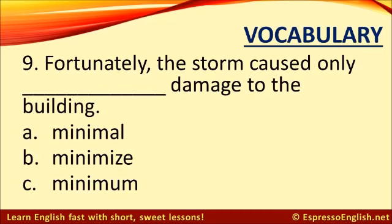Number nine. Fortunately, the storm caused only... damage to the building. A. Minimal. B. Minimize. The correct answer is A. Minimal. Fortunately, the storm caused only minimal damage to the building. If something is minimal, it means it is very small.